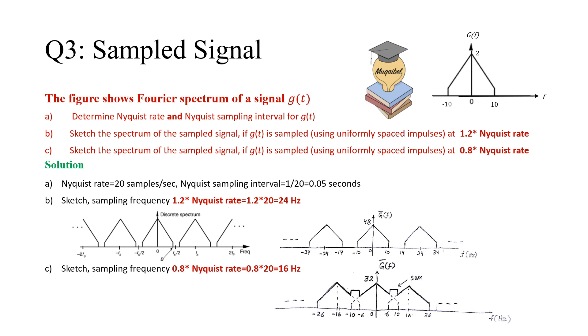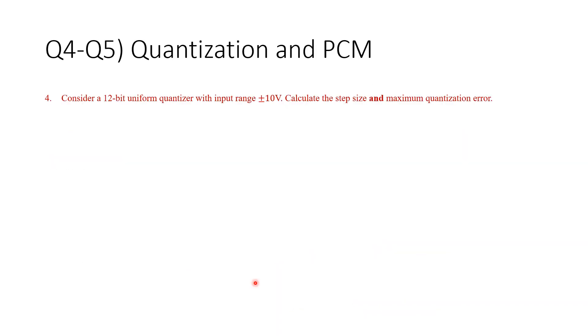Now, we move to question number four. Question number four and five. Consider a 12-bit uniform quantizer. This is about quantization. With input range of minus plus 10 volt, that's minus MP plus MP. Calculate the step size and the maximum quantization error. There are two requests. You can pause the video and continue when you are ready.